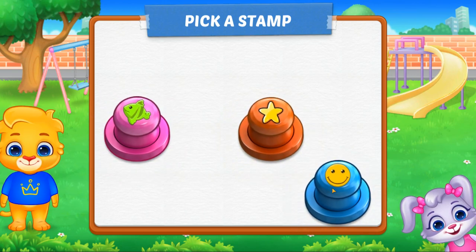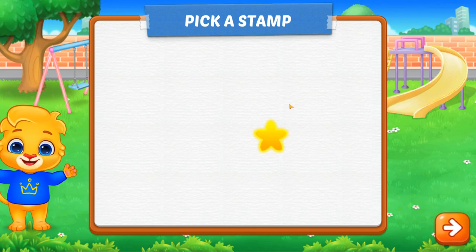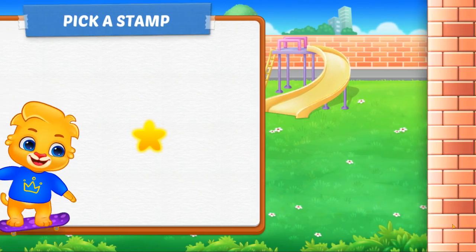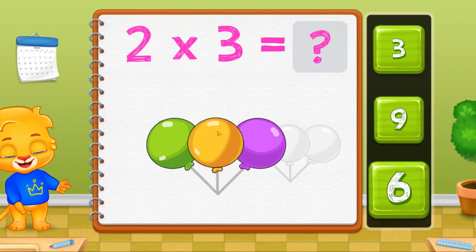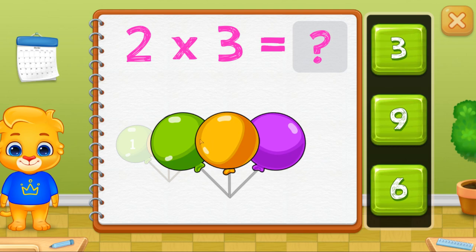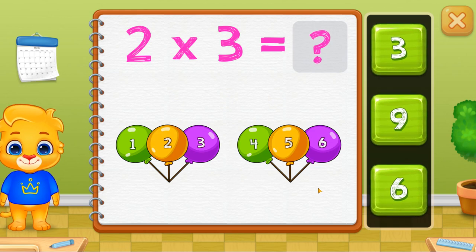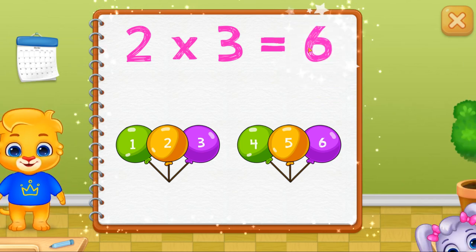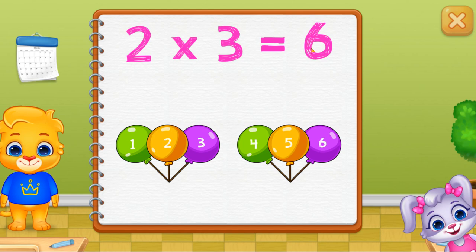Pick a stamp. One, two, three, four, five, six. Two, three, four, five, six. Two times three equals six.